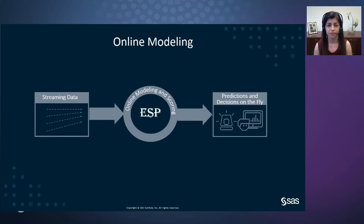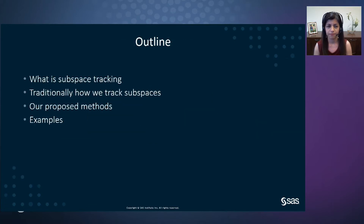In some of the methods implemented in SAS's event stream processing, we go one step further — not only can we score the data as it's streaming, we can do modeling and update the models online using the streaming data. This enables us to analyze non-stationary, high-frequency, and high-dimensional IoT data. In this presentation, I will talk about such an online model for anomaly and degradation detection called subspace tracking, which is implemented in SAS ESP.